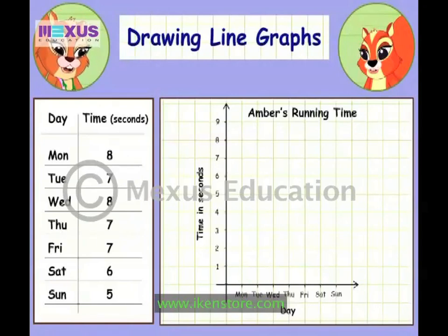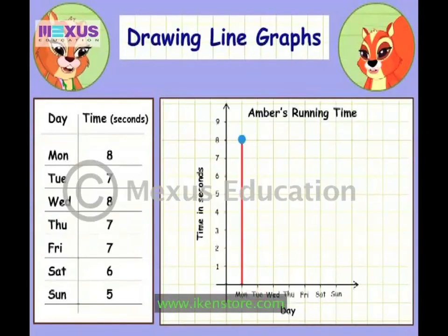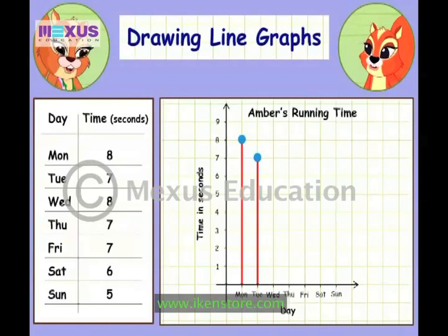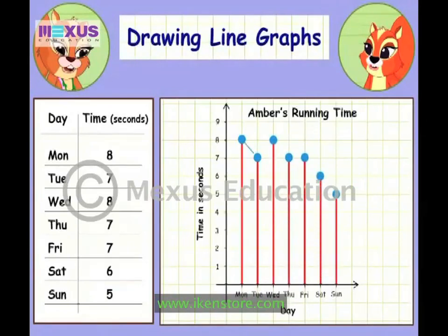For example, on Monday, you took 8 seconds. So, draw a point 8 boxes above Monday — that is, you count 8 horizontal lines. Similarly, for Tuesday, you draw a point 7 boxes above — that is, you count 7 horizontal lines above Tuesday. After you have drawn a point for each day, join them by lines.